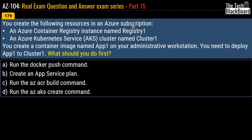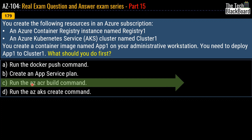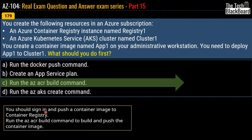Question 179: You create an Azure Container Registry instance named Registry1 and an Azure Kubernetes Service cluster named Cluster1. You create a container image named App1 on your administrative workstation. You need to deploy App1 to Cluster1. What should you do first? Options: run docker push, create an App Service plan, run az acr build, or run az aks create. The correct answer is option C, run the az acr build command. You should sign in to the Azure portal, push the container image to the container registry, then run az acr build to build and push the container image.